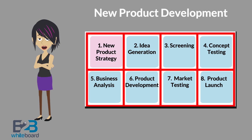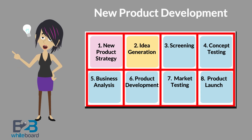Let's examine the eight steps to effective new product development. The first step involves clearly defining your goals and objectives for your new product or service. The second step is idea generation, which involves collective brainstorming through internal and external sources.